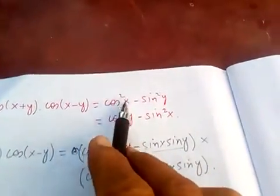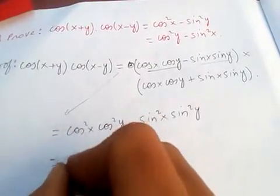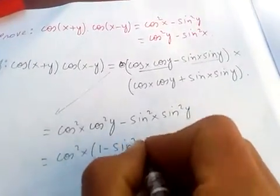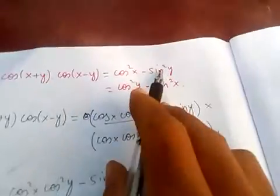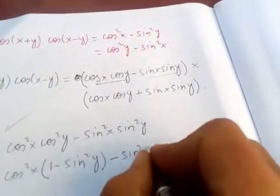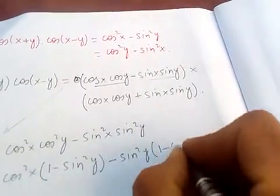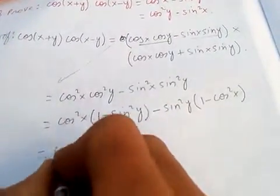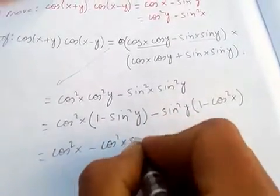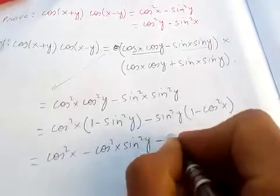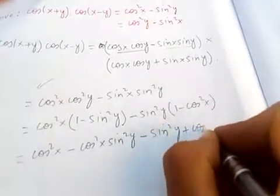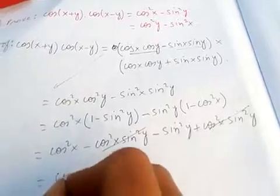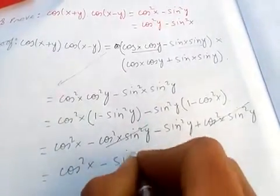So we get cos²(x)cos²(y) - sin²(x)sin²(y). Now we want cos²x, so we keep that. For cos²y, we substitute 1 - sin²y, and for sin²x we substitute 1 - cos²x. After multiplying out, cos²x terms cancel, and lastly we get cos²x - sin²y.